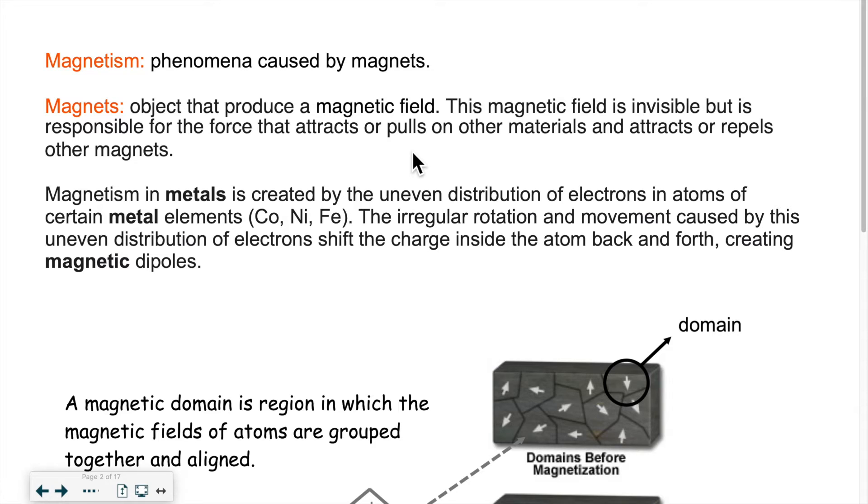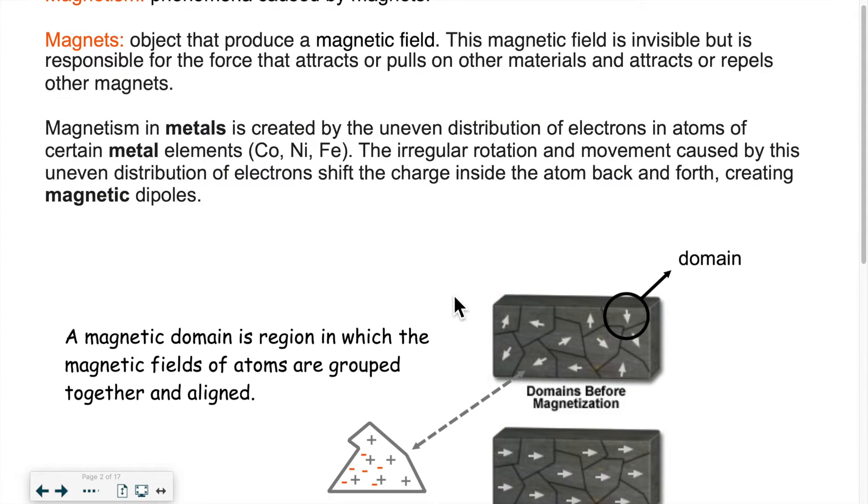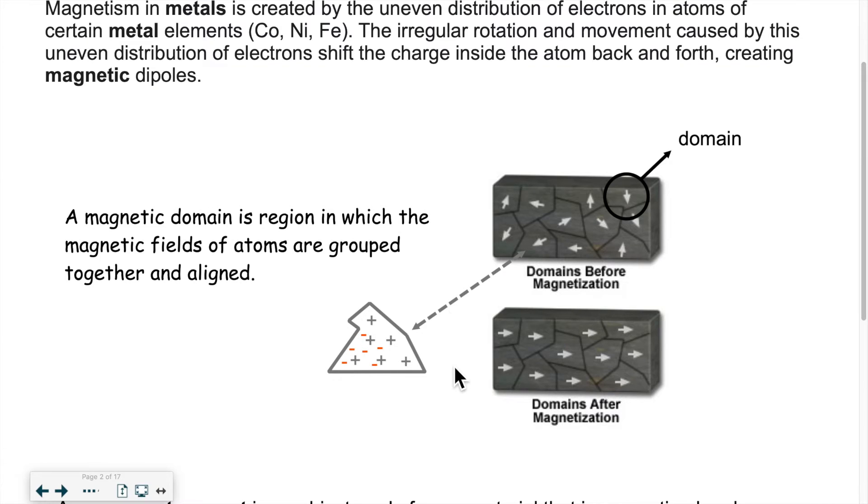So magnetism in metals. We know it's metallic substances that can be attracted or magnetized. Why is it created? It's created because there's electrons inside the atoms and these electrons are not distributed evenly. Because they're not distributed evenly, it causes a kind of polarization. We talked about polarization in the past. So it creates what we call poles.